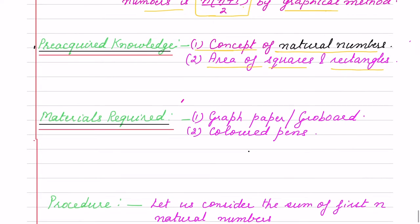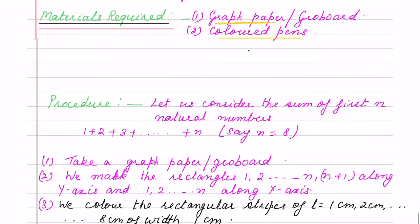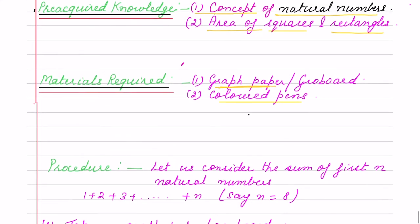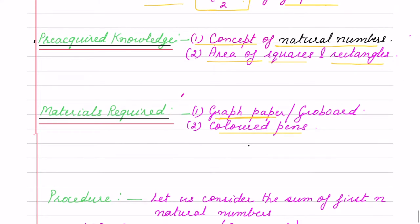The materials required: if you are using a geoboard — an online geoboard — then only the geoboard is enough. Or you can use graph paper and colored pens. We will mark the numbers on the geoboard. Now I am going to show you how to start this, and then we will discuss it.